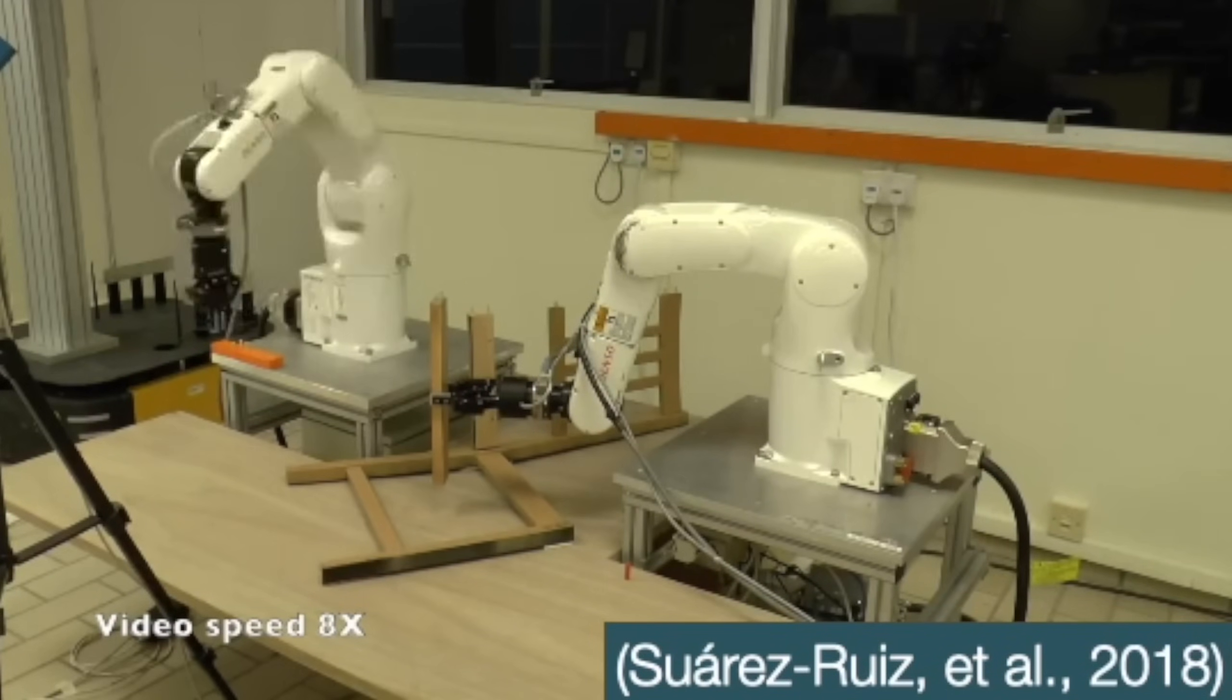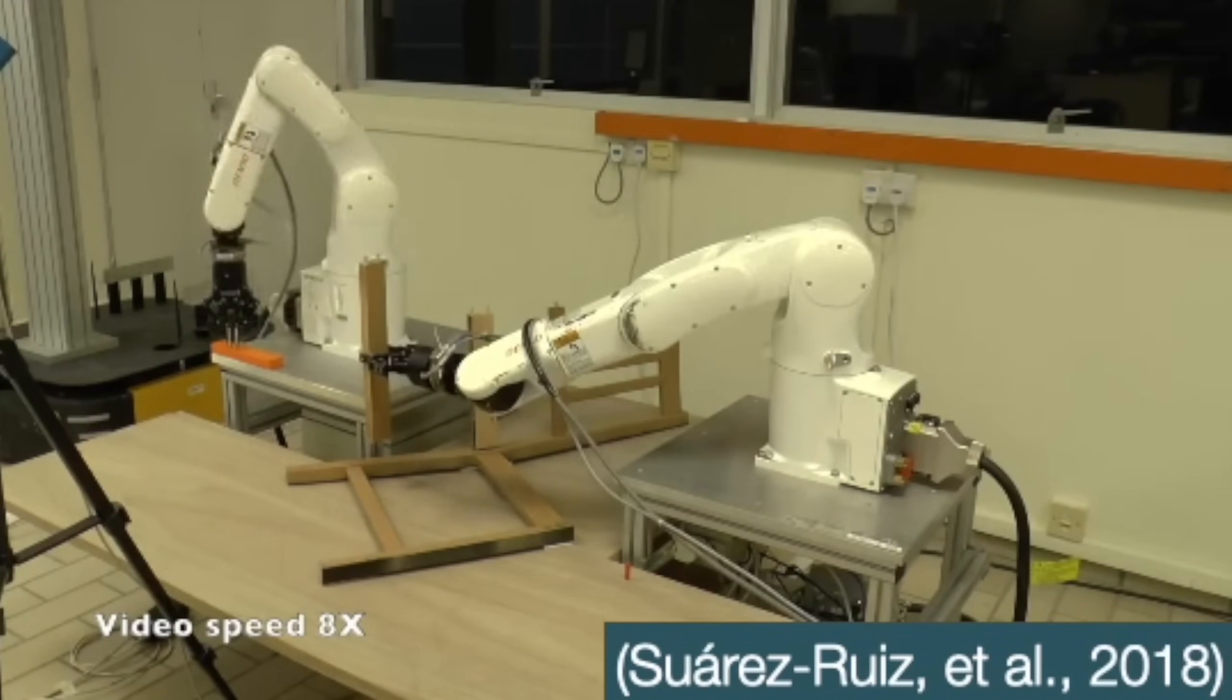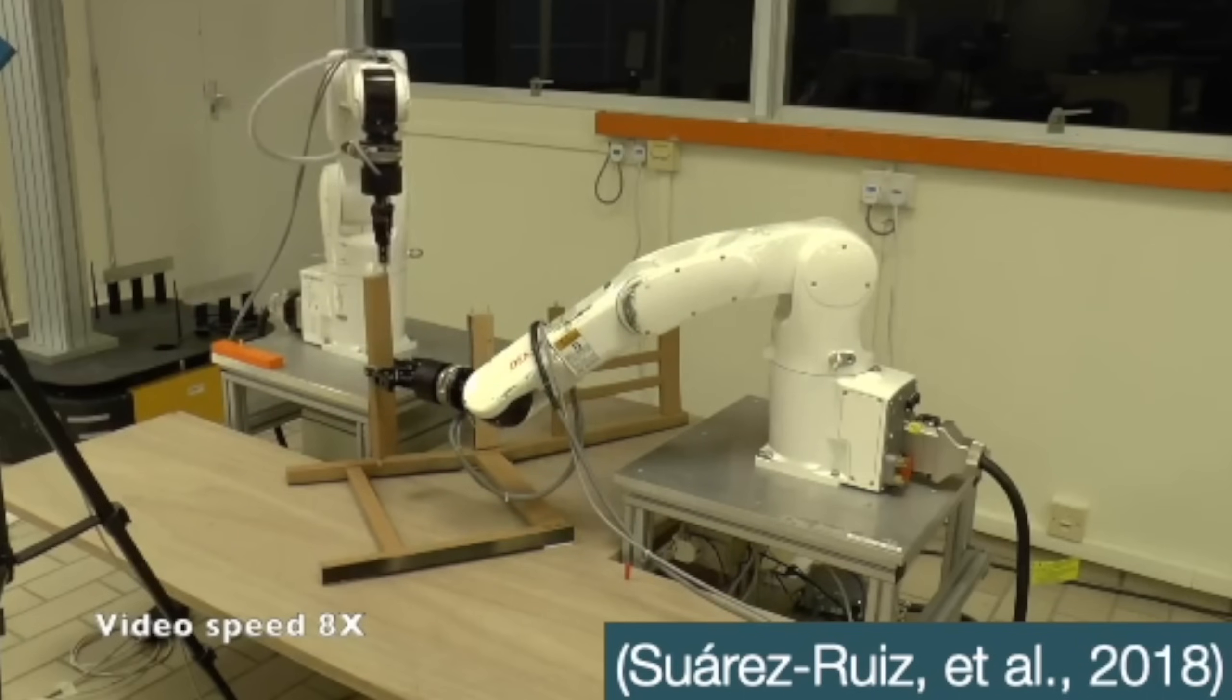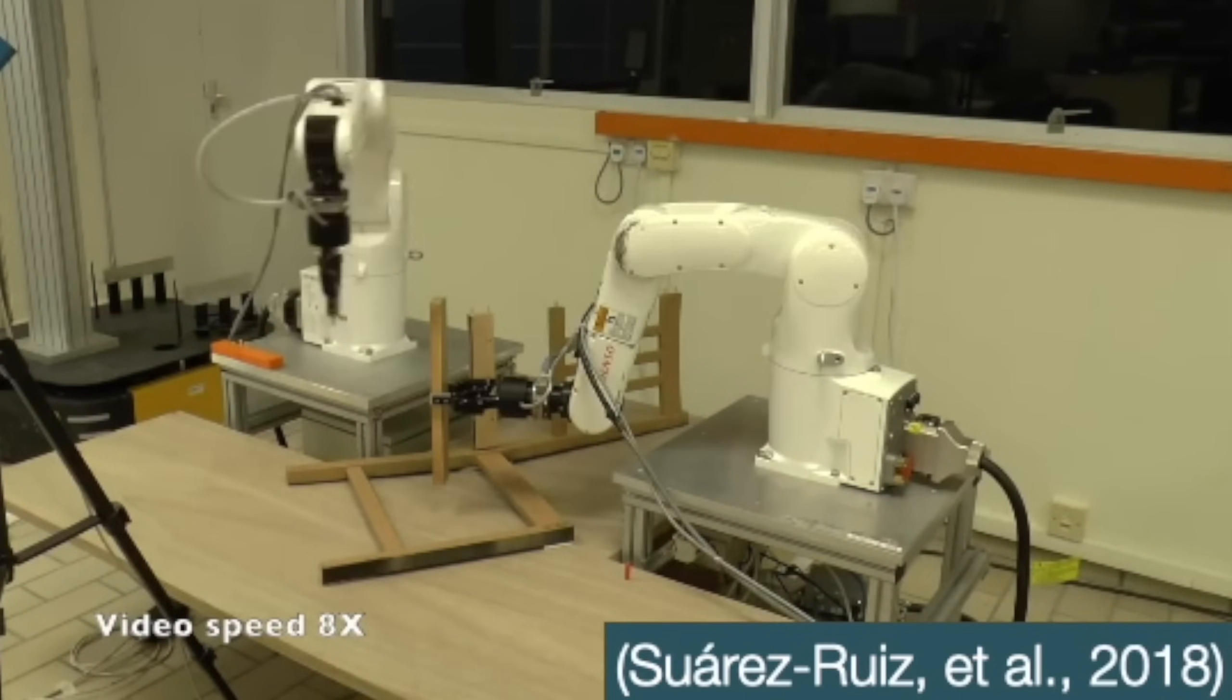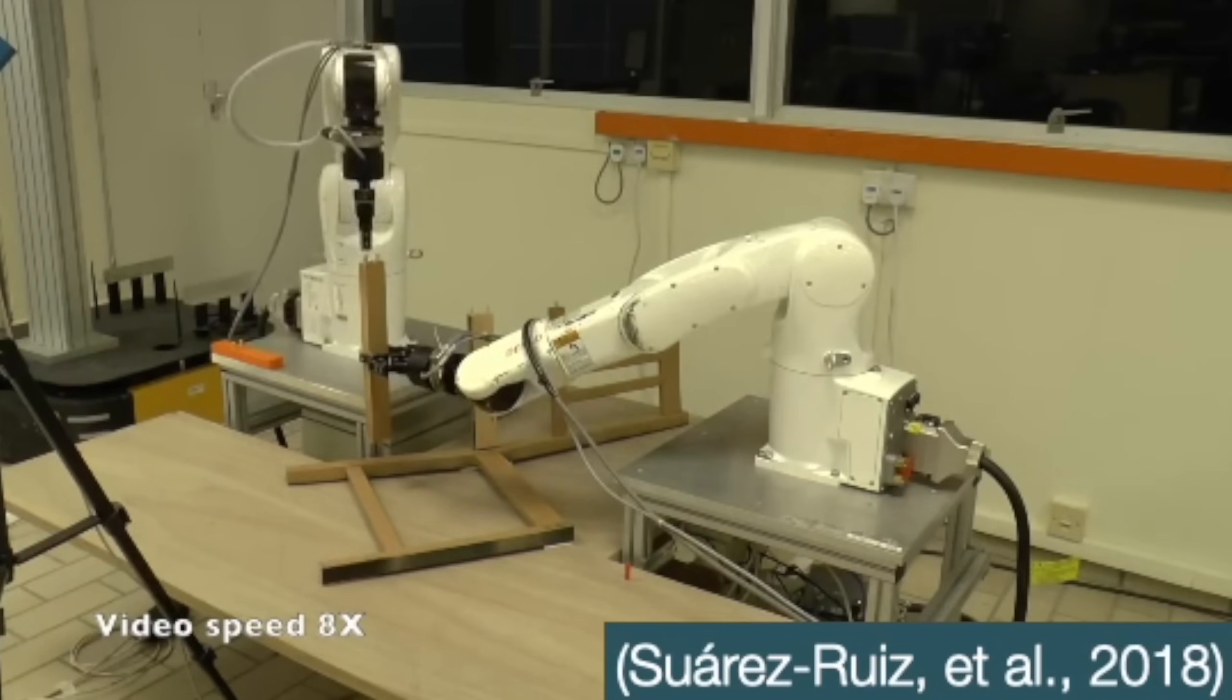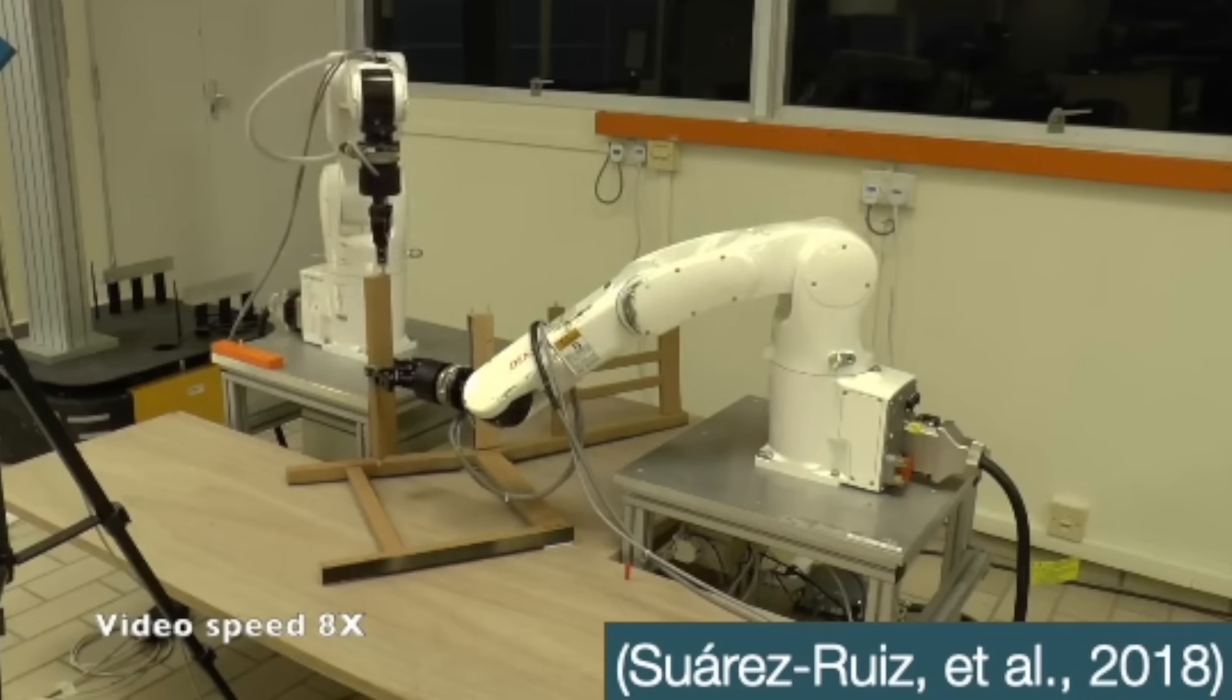Now, from a different research paper, here comes the cheaper solution. General purpose robot arms. These are much cheaper. However, they are also much more unreliable and slow. So, what is the answer?